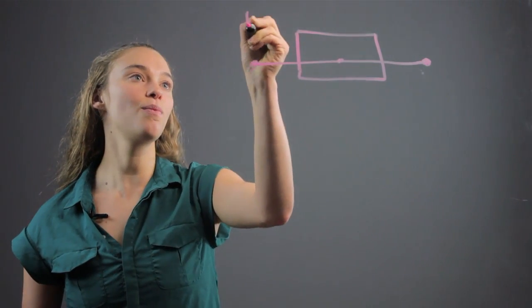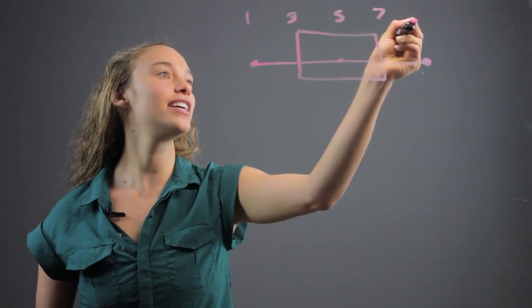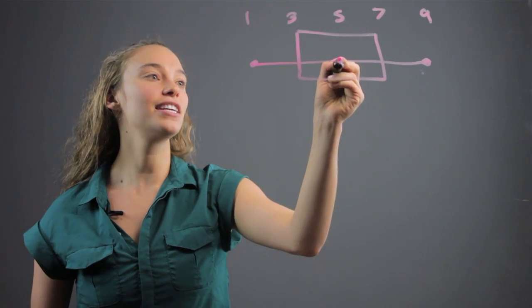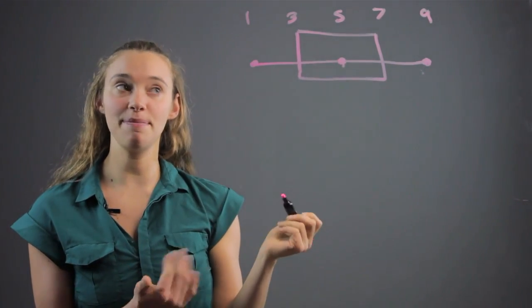So, if the data is one, three, five, seven, and nine, then those are the numbers that we're using. Five is the median of those numbers, and we want to find the mean.